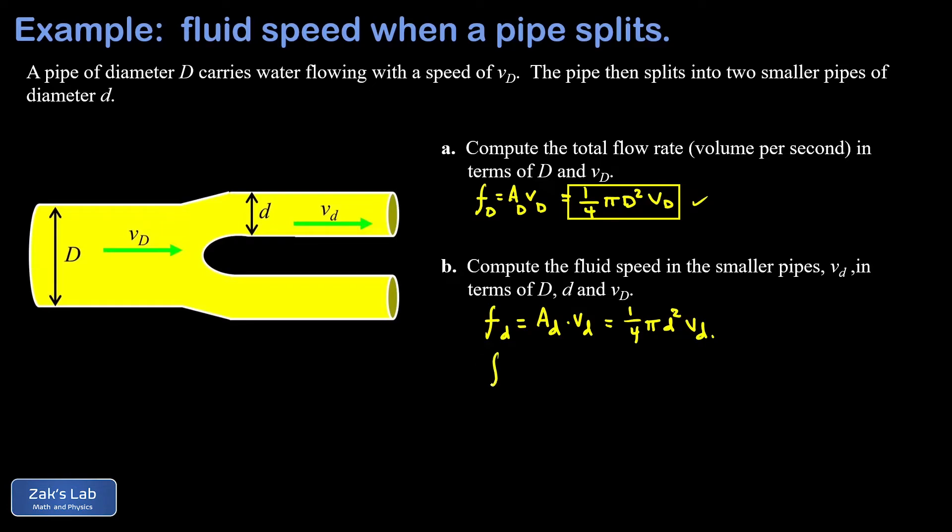That means the flow rate in the fat part of the pipe must be equal to twice the flow rate in one of the skinny pipes, because when I put those two pipes together I get the same flow rate as the original big pipe. So we go ahead and plug in what we found for the flow rate in the large part.